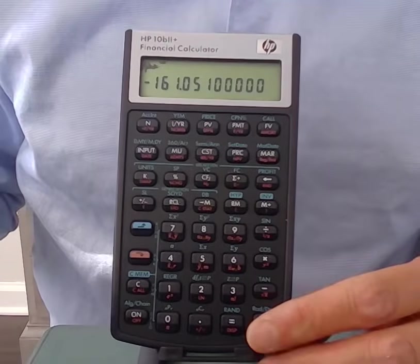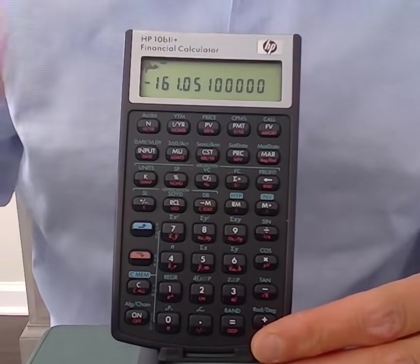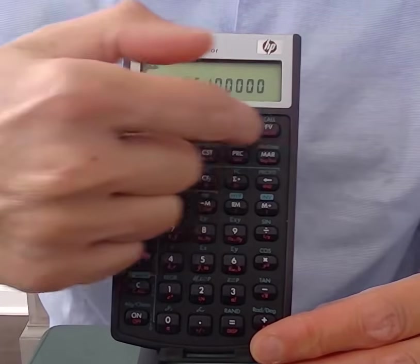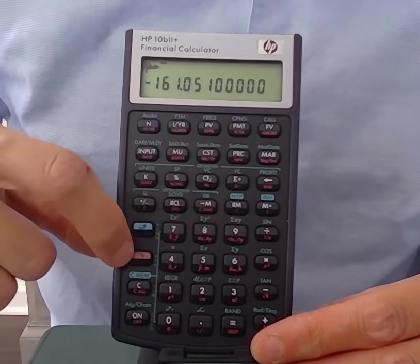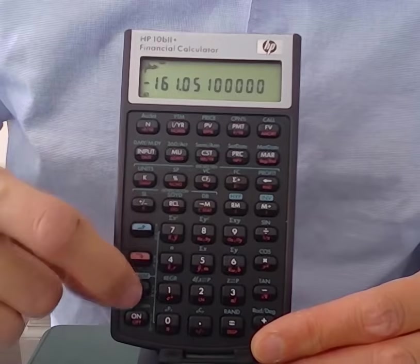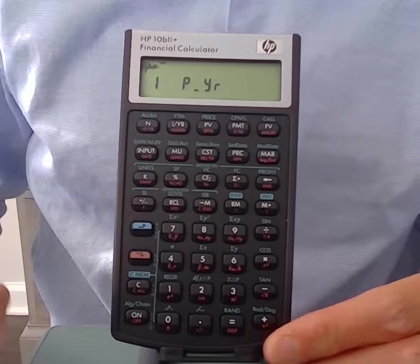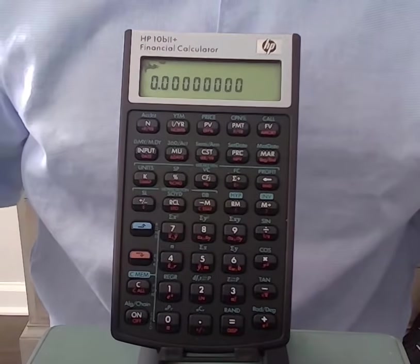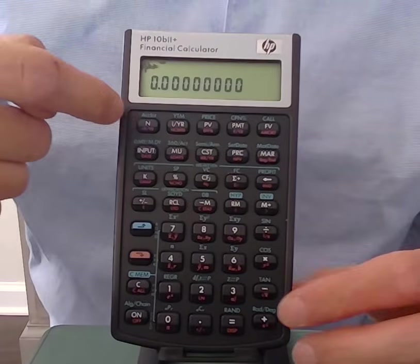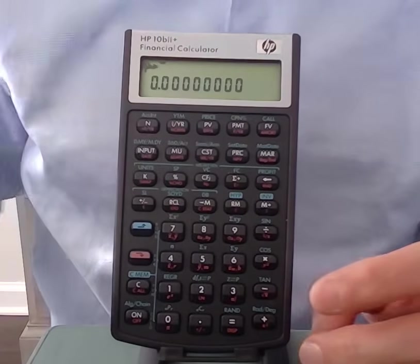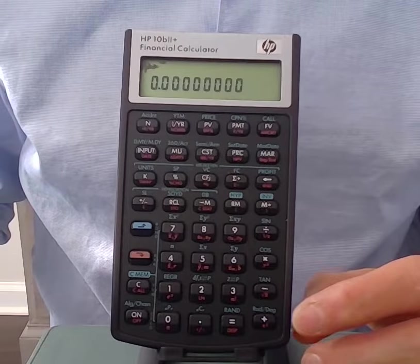Before you go on to your next problem, it is a good idea to clear out everything that's stored here in these buttons. So to clear everything, I'm just going to press the shift and then C button again. It flashes what the setting is, which is still one period per year, but now zeros are stored for all of these five parameters.